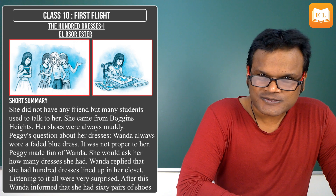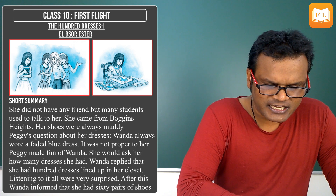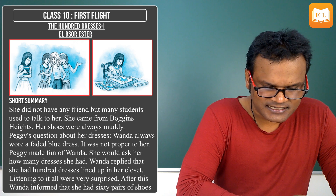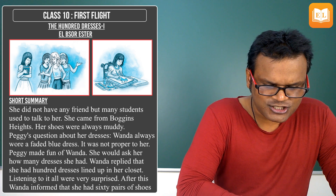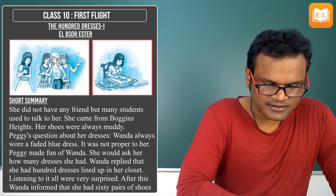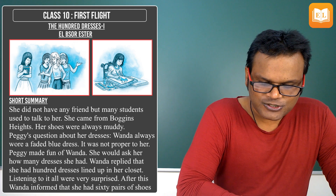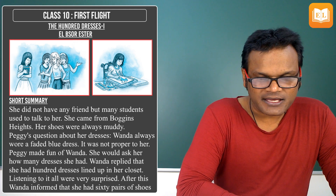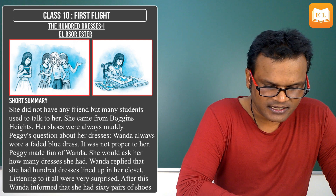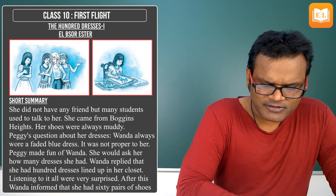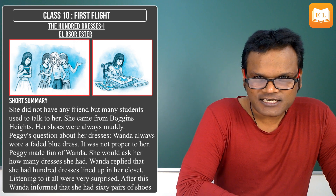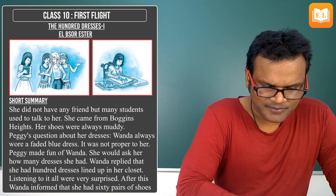She came from Boggins Heights. Her shoes were always muddy. Peggy used to ask her about her dresses. Wanda always wore a faded blue dress that was not proper to her.